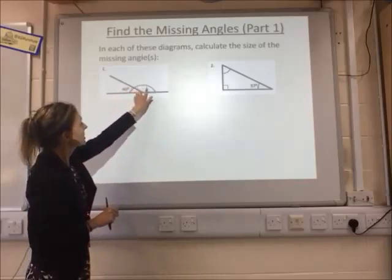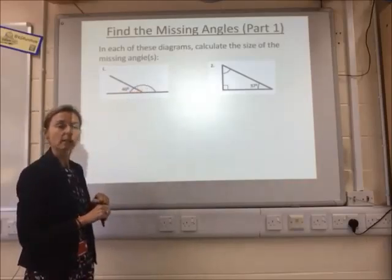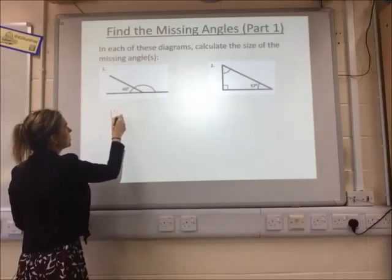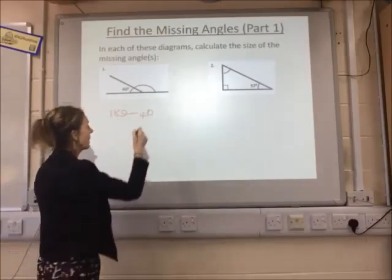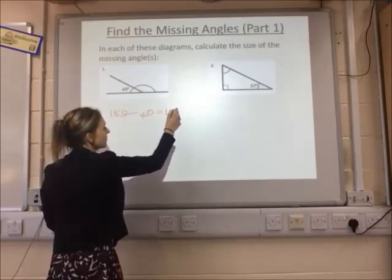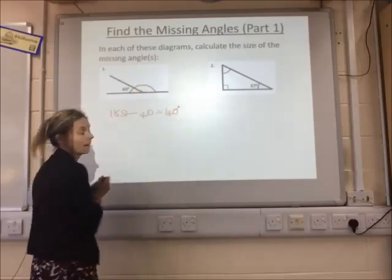So this one plus this one gives me 180. What you need to do is 180 degrees take away 40 degrees. If you work that out, you get 140 degrees for your missing angle.